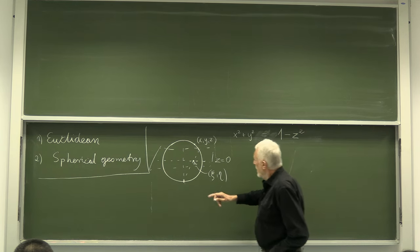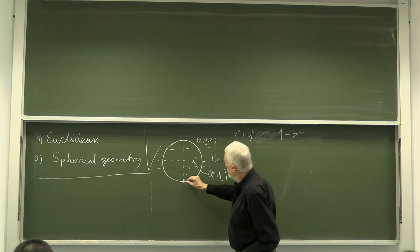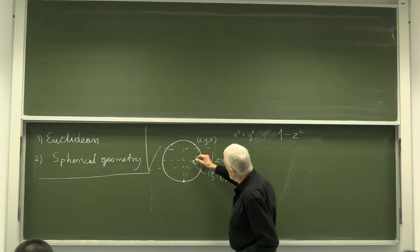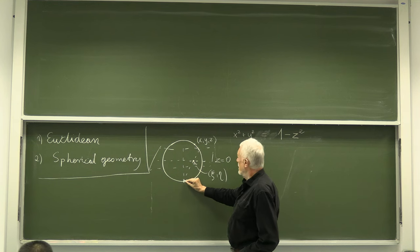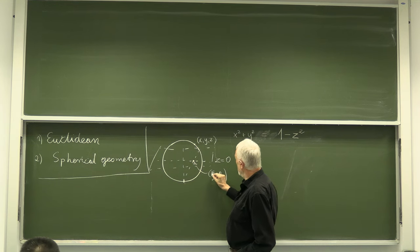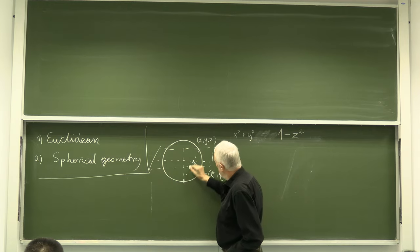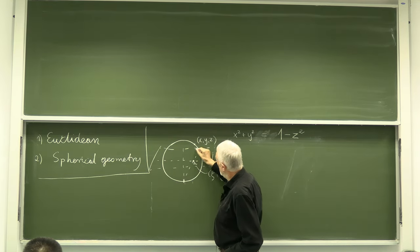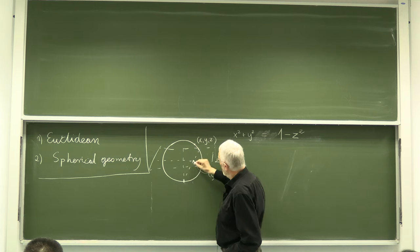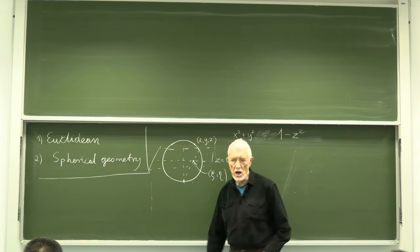What is the relation between ξ, η and the sphere coordinates? You can see that there is Thales' law because there are two similar triangles.